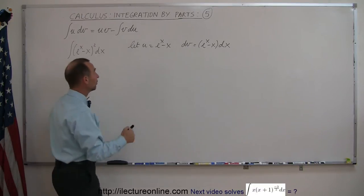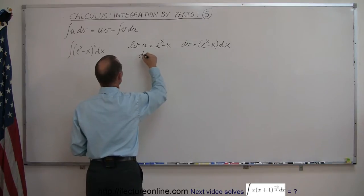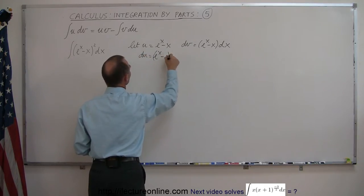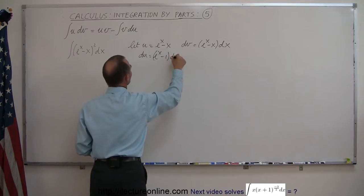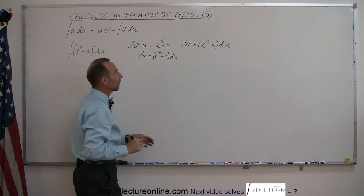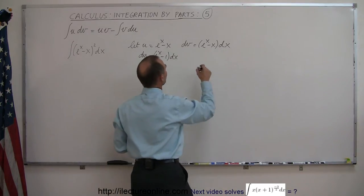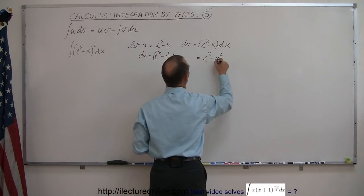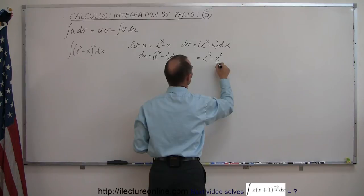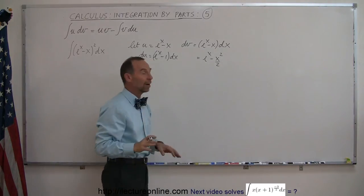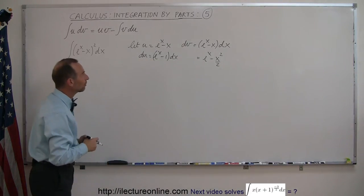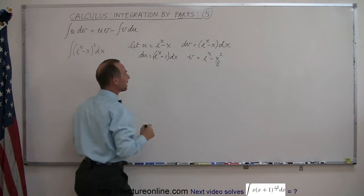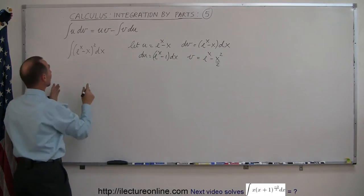Now we just continue with the process. We find du, which is equal to e to the x minus 1 times dx. And when we integrate dv, v is equal to e to the x minus x squared over 2. We don't have to write the constant of integration now — we can wait until later. So now we have a du and a v, and we can go ahead and plug that in.